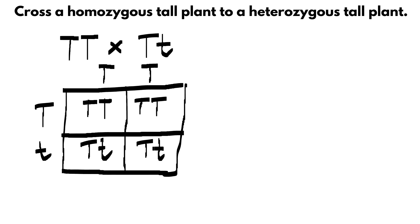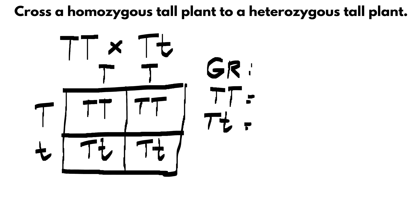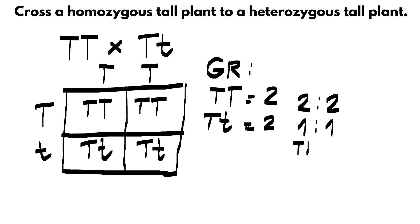After accomplishing the Punnett square, we can now determine the genotypic ratio. What we need to do is look for the possible genotypes in the Punnett square. As you can see, there are only two possible genotypes. Let's count how many of genotype number 1 we can see — there are 2. And for genotype number 2, there are also 2. So our genotypic ratio is 2 to 2, or simply 1 to 1, to show that there are only two possible genotypes.